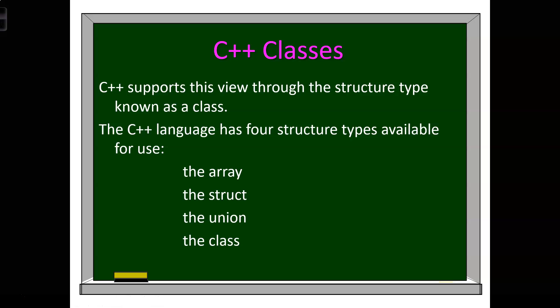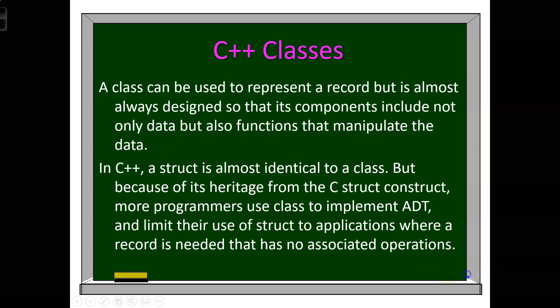The C++ language has four structure types available for use: the array, the struct, the union, and the class. A class can be used to represent a record, but it is almost always designed so that its components include not only data, but also functions that manipulate the data. In C++, a struct is almost identical to a class, but more programmers use class to implement ADTs and limit their use of struct to applications where a record is needed that has no associated operations.